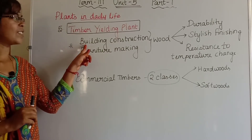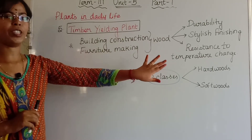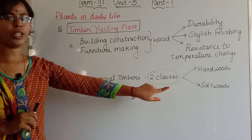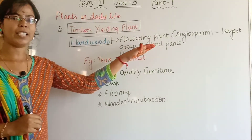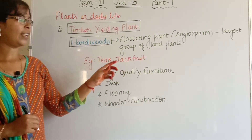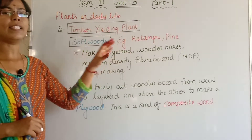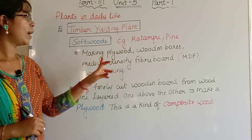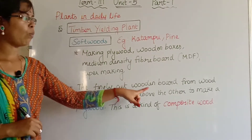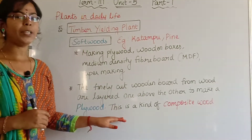The fifth category is timber yielding plants. Timber is wood used for building construction and furniture making, valued for its durability, finishing and resistance to temperature change. In commercial wood, there are two classes: hardwood and softwood. Hardwood comes from flowering plants (angiosperms), the largest group of land plants — for example, teak and jackfruit, used for high quality furniture, flooring and wooden construction. Softwood, for example kadambu and pine, is used to make plywood, wooden boxes, medium density fiber board and paper.